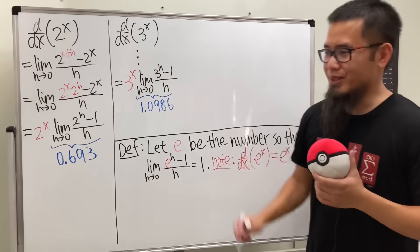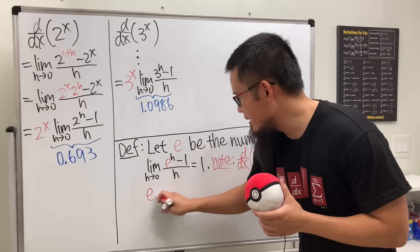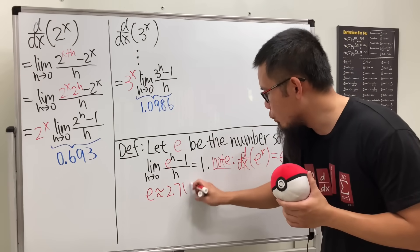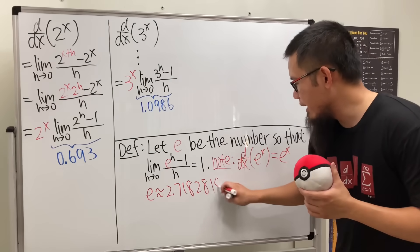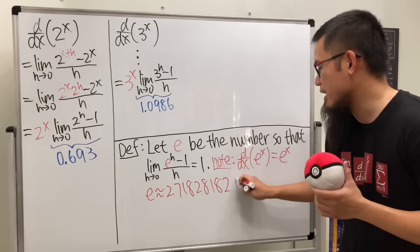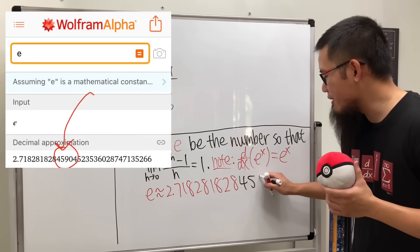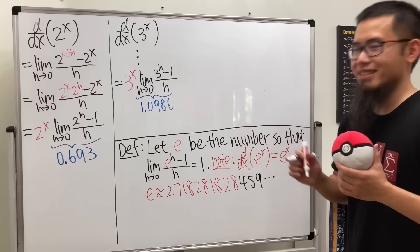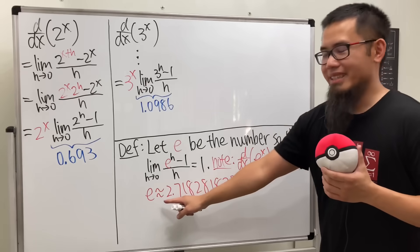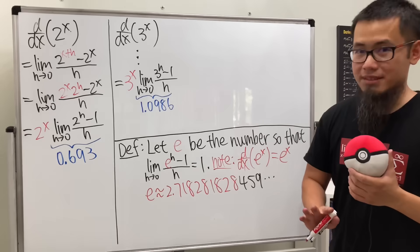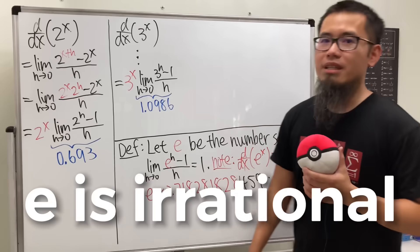So, yeah, just do that on your own. But here, I will tell you guys what e is. E is approximately 2.7182818, 1828, yes. What's next? 4, 5, 9, and so on, so on, so on. It does seem like it repeats, but no, it does not. Because e is actually irrational.